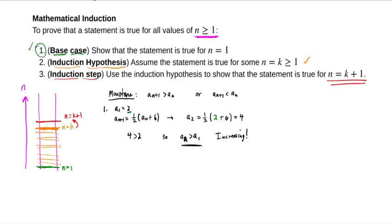The next step of induction is to just make the hypothesis and write it down. We know we're on the ladder, so let's assume we're on some rung. Step 2 is to assume that a sub k+1 is greater than a sub k for some k greater than or equal to 1. This is not a crazy assumption because we already proved that it's true for k equal to 1. That's the importance of the base case.